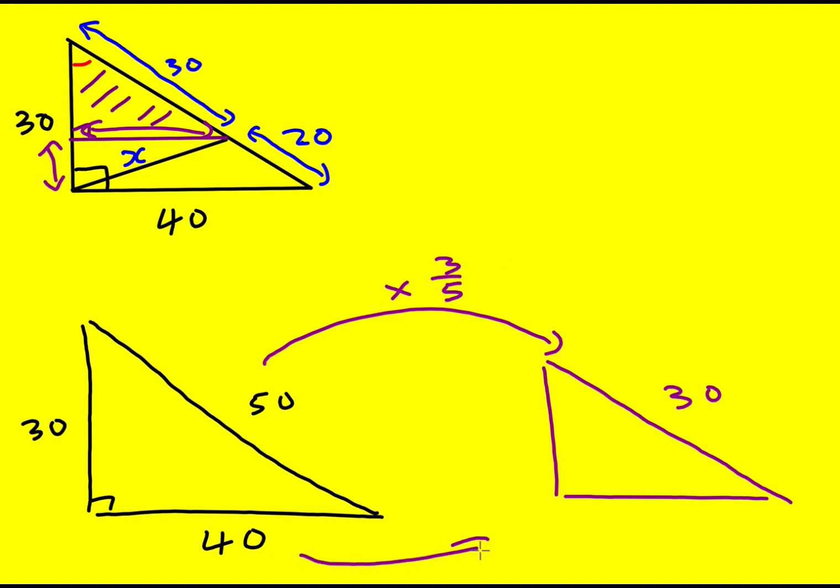So that means I just need to times 40 by 3 over 5. 40 divided by 5 is 8, 8 times 3 is 24. So this purple length is 24. Then we can do the same with the 30 times by 3 over 5 divided by 5 to give 6 times by 3 to give 18.